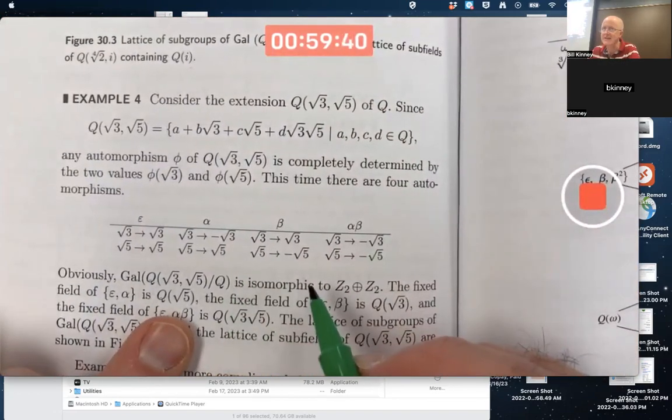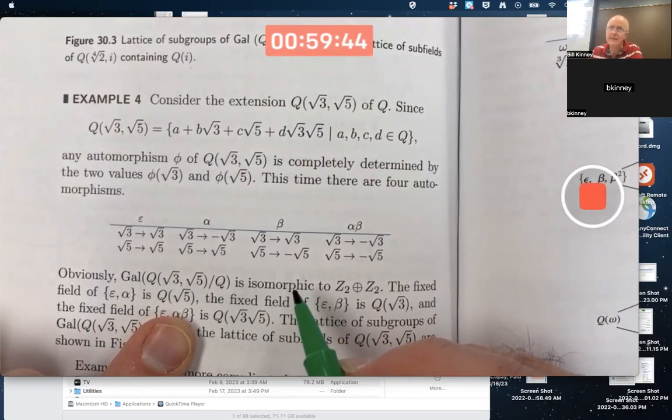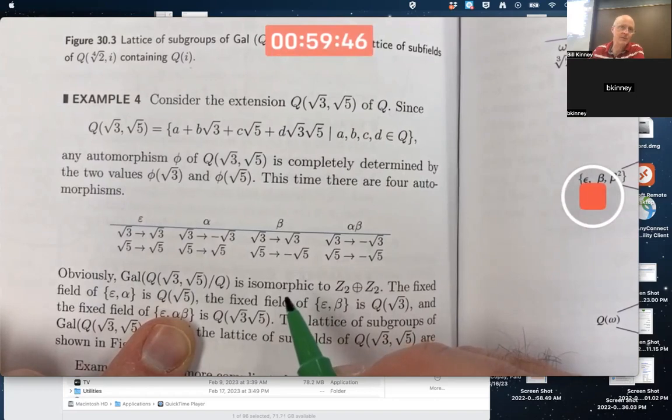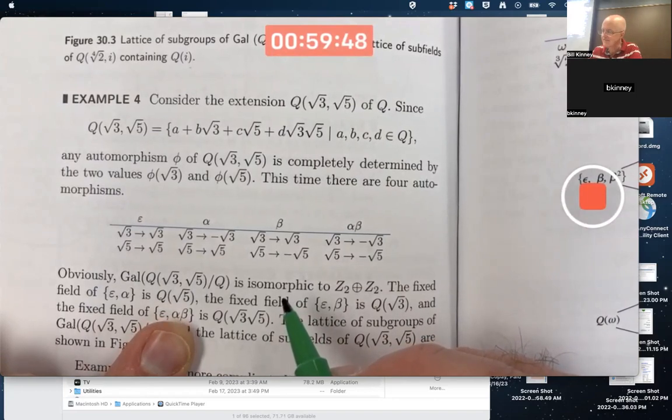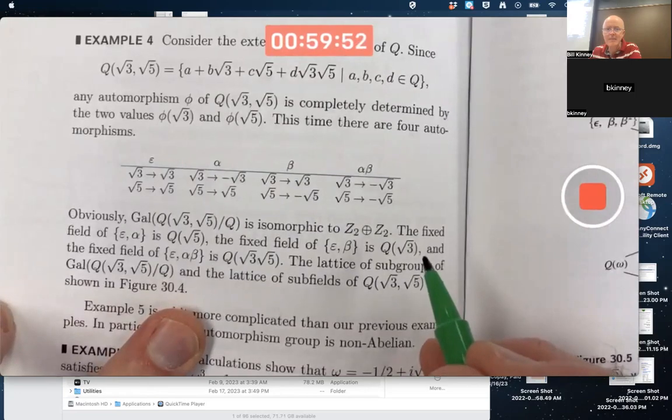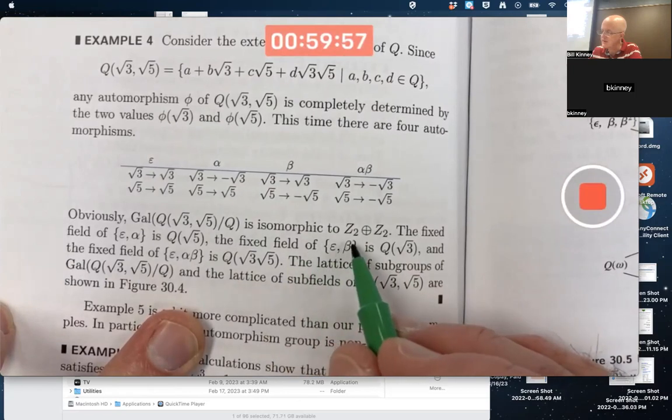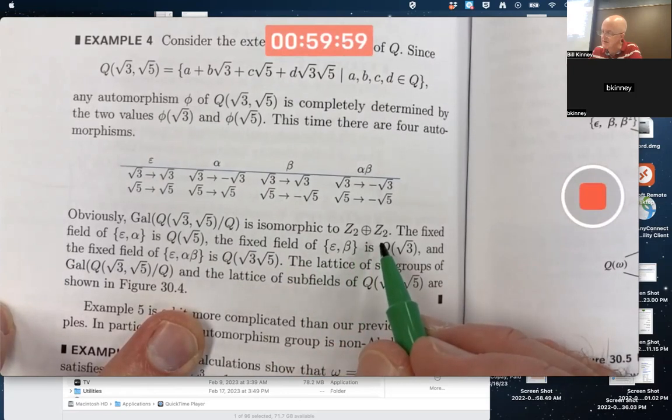So you've got to have this kind of mapping going on, not root 3 getting mapped to root 5, root 5 getting mapped to root 3. So these are the only four possibilities. None of these elements has order 4. This is not a cyclic group of order 4. It's isomorphic to the external direct product of Z2 with itself.